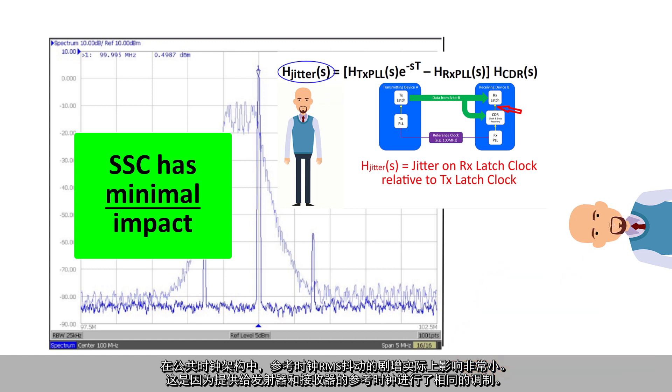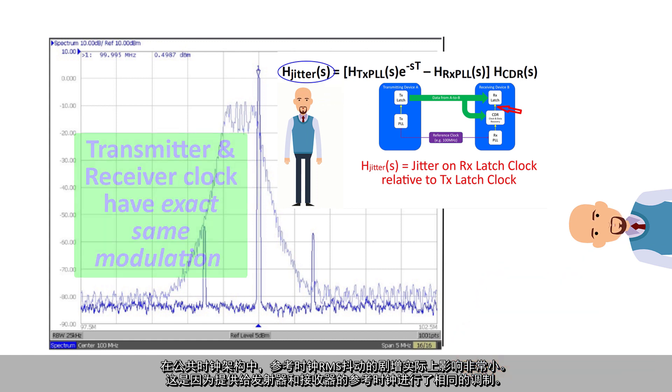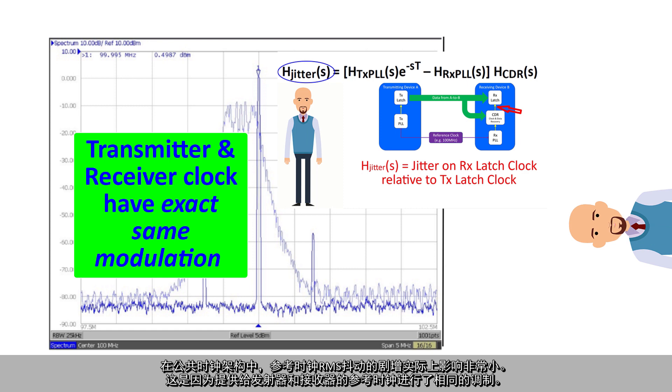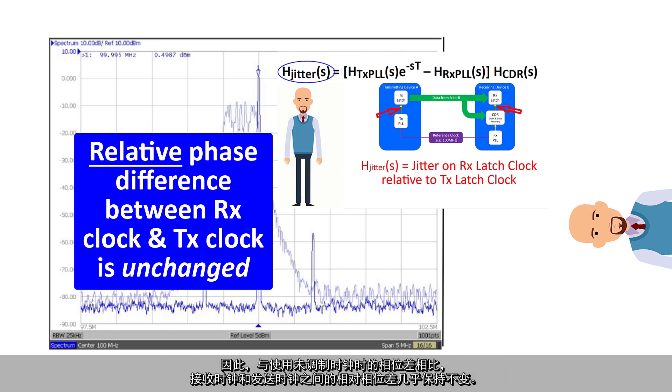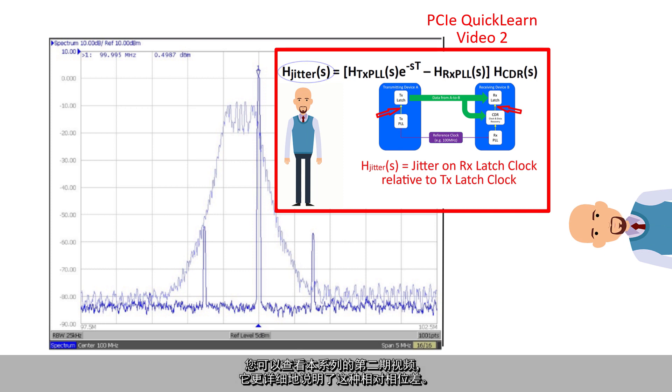This is because the reference clock provided to the transmitter and receiver is modulated identically for both. As a result, the relative phase difference between the receive clock and transmit clock is virtually unchanged when compared to the phase difference one sees when an unmodulated clock is used. You may want to view the previous video in this series, which explains this relative phase difference in more detail.